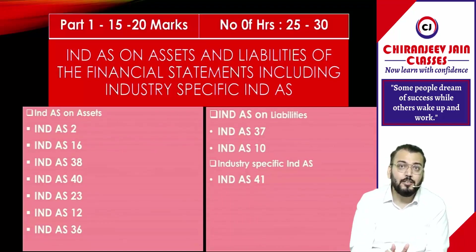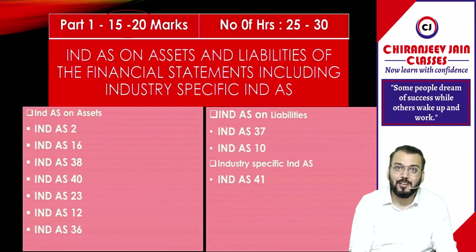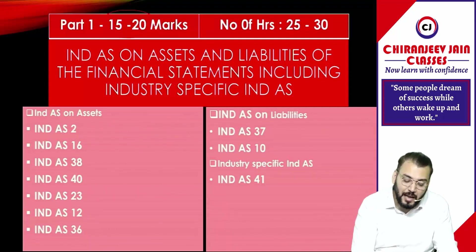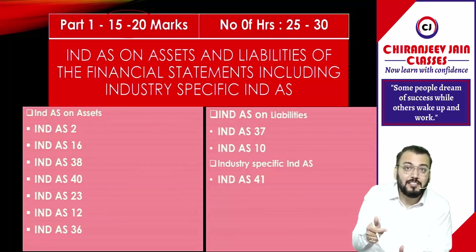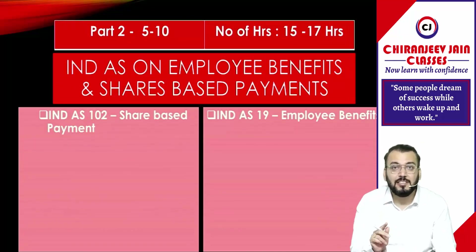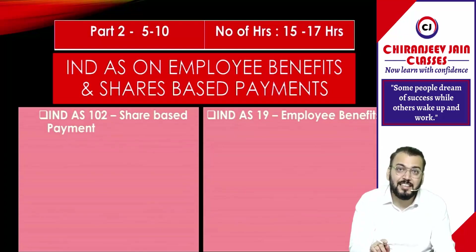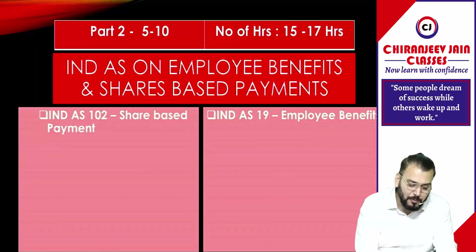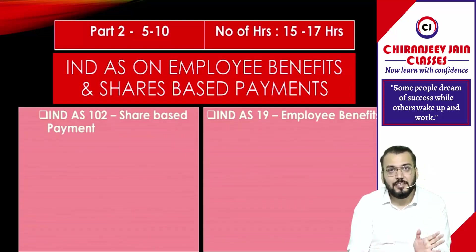You should not use ABC category analysis for the first revision of FR — that will be used for the second revision. The Ind AS related to assets and liabilities normally carry questions of 15 to 20 marks, and for Part 1 chapters I have allocated 25 to 30 hours. Then Part 2: you should move to Ind AS 19 and Ind AS 102, related to employee benefits. The weightage from this chapter is 5 to 10 marks, and I have allocated 15 to 17 hours for revision of this chapter.